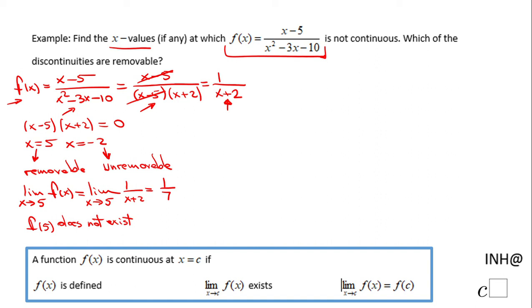However, this is a removable discontinuity. For non-removable, if you do the limit as x approaches negative 2—this is the second point where the function is not continuous—of f(x), we end up with the limit as x approaches negative 2 of 1 over (x + 2). And if you replace that with negative 2, you get 1 over 0.